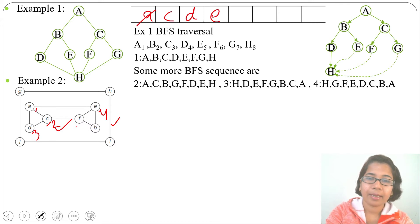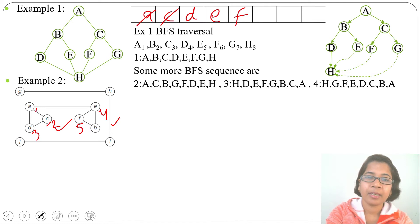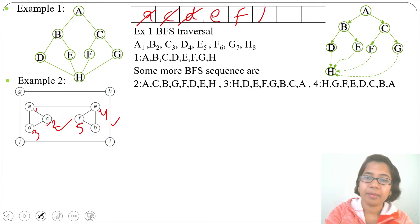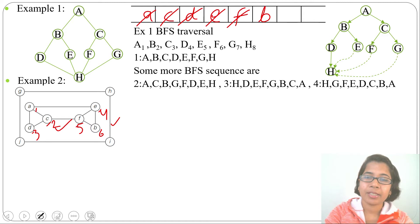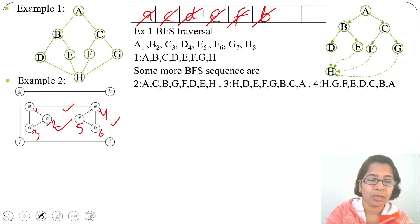Next, D's adjacents are A and C — already visited — so we delete D. E's adjacent is B, so we insert B and delete E. F's adjacents are E and B — already in the queue — so we delete F. B's adjacents are all already visited so we delete B. We have completed BFS traversal on the inner component. Next we will do BFS traversal on the outer component — we can start from any vertex, so let's start from G.